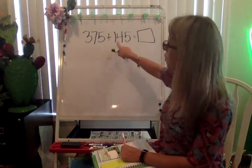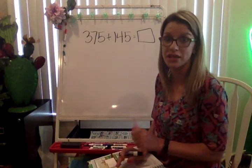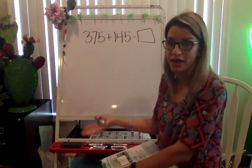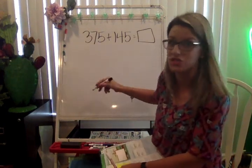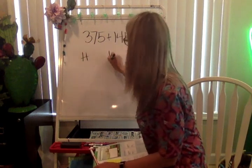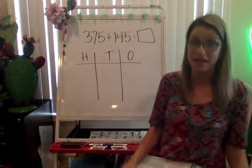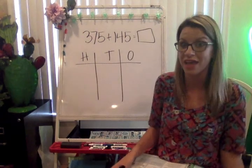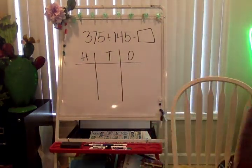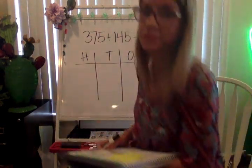So 375 plus 145 on a place value chart. I want you to go ahead and pause and I want you to make sure that you know how to do this before I dive right into it. This builds on our lesson from yesterday. This is something that we practiced yesterday. So pause, write it on there, and I'm going to come back and we're going to review what it should look like. Then I'll talk to you about how that connects with what we're learning today.